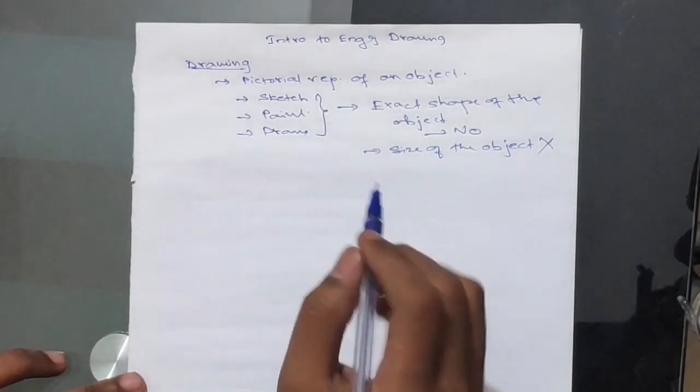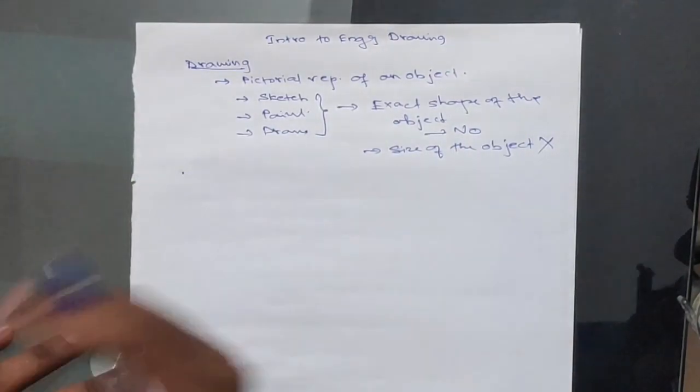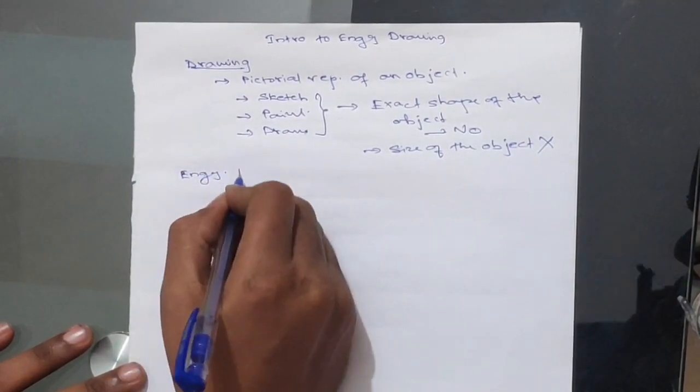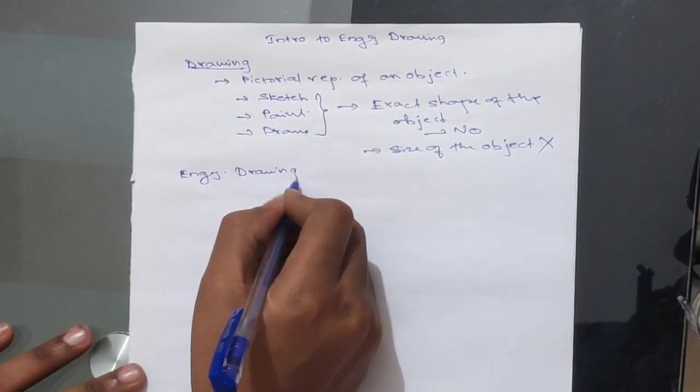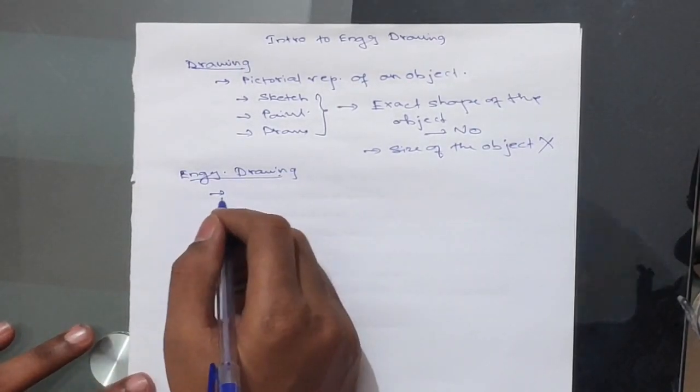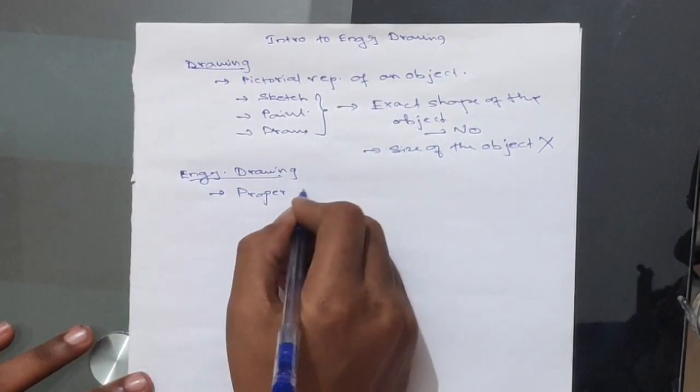Neither the shape nor the size of the object can be determined just using a drawing. In order to overcome this difficulty, the drawing is further refined into Engineering Drawing. In Engineering Drawing, it is again the pictorial representation of an object, but this time it is with some proper standards.